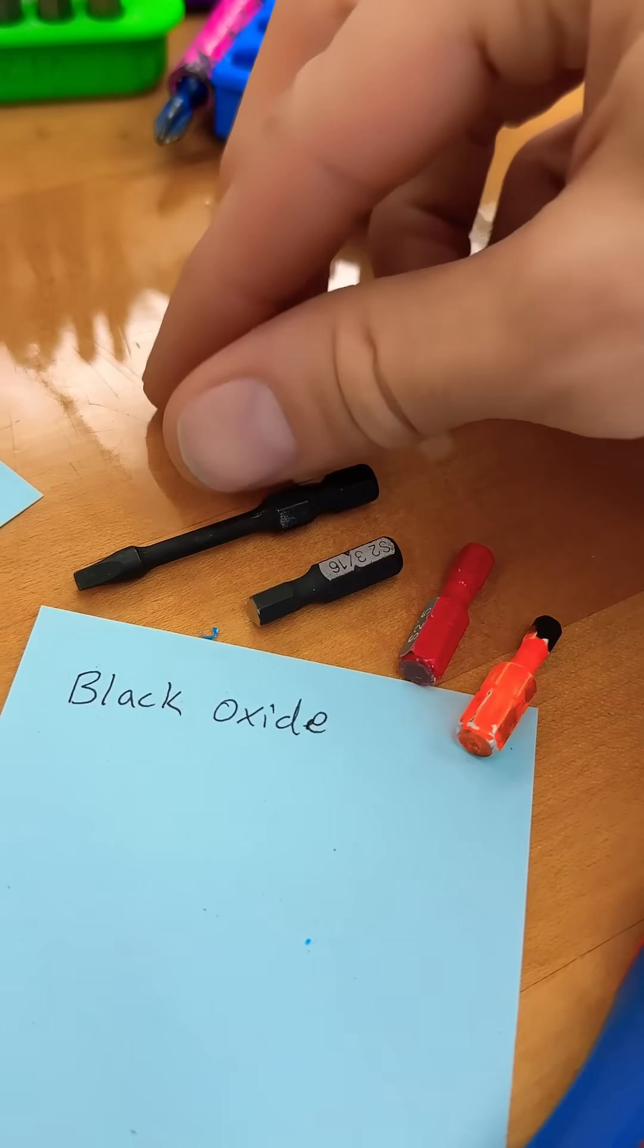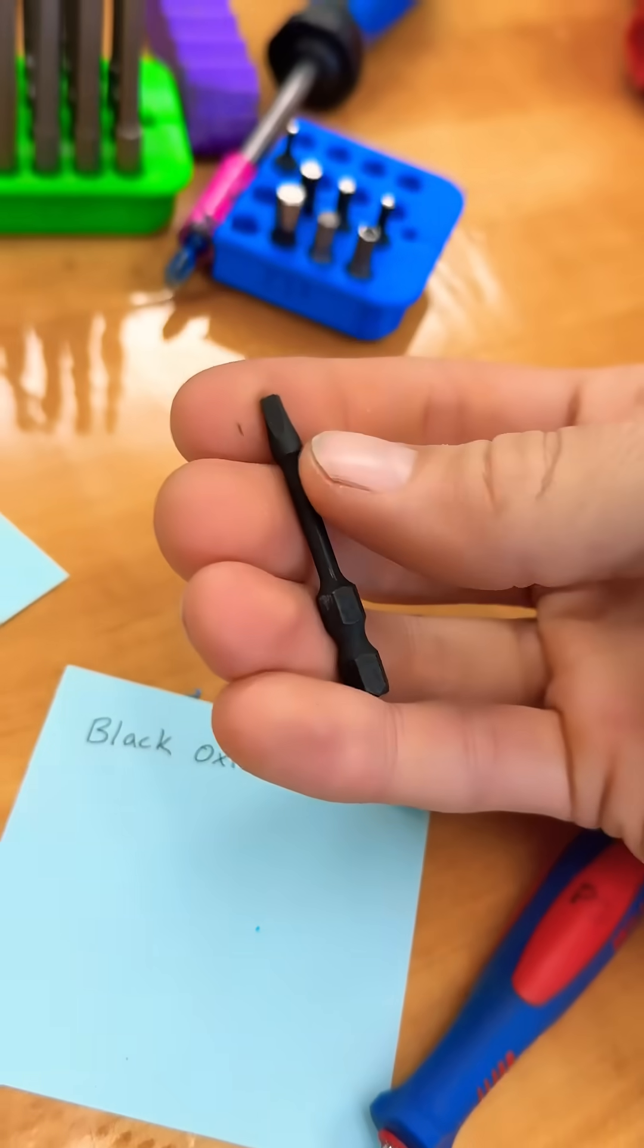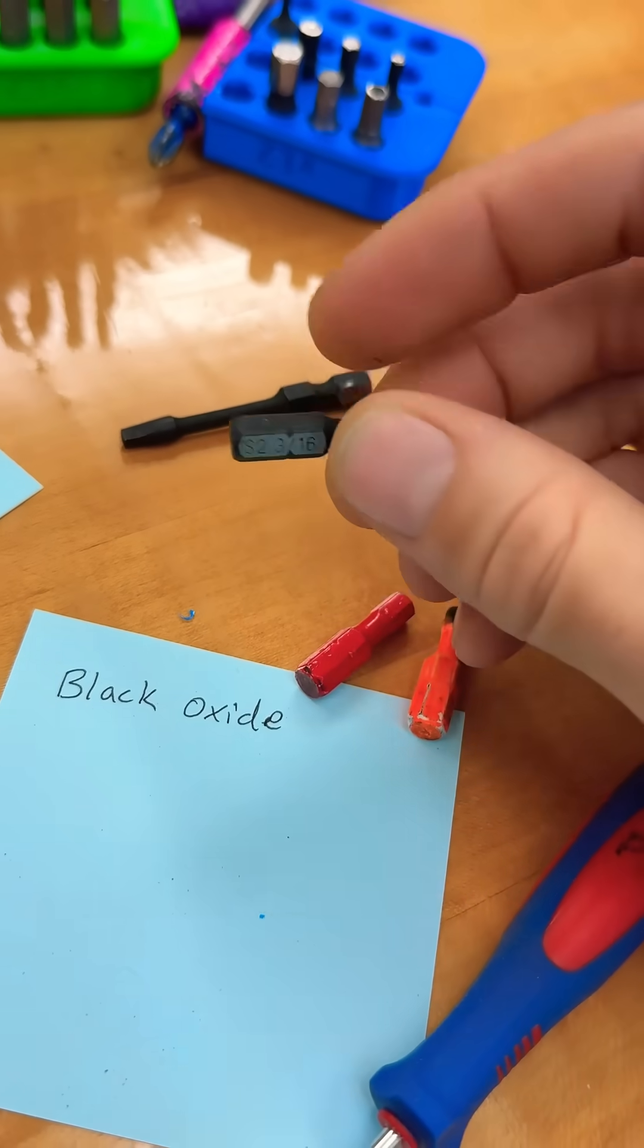Both of these bits have a black oxide coating, that's that matte color on the surface. But this one is much stronger and tougher because it is S2 steel as marked right there.